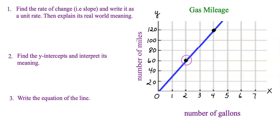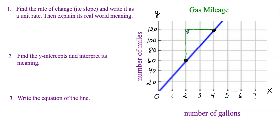Starting from the left point, my first movement is always up or down — in this case, up — and then I move to the right. I've now connected the two points with a slope triangle. I'll put in arrows to indicate how I moved: up and to the right. We know the slope is positive because the line slants upward from left to right.